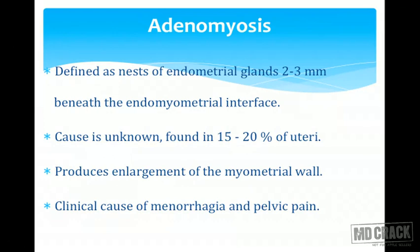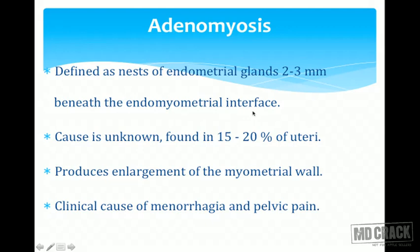Adenomyosis is defined as nests of endometrial glands located two to three millimeters beneath the endomyometrial surface. Microscopically, it should be at least one low-power field beneath the endometrial interface — at 10x, you should see endometrial glands at least somewhere in the middle of the myometrium to call it adenomyosis. The cause is most often unknown.